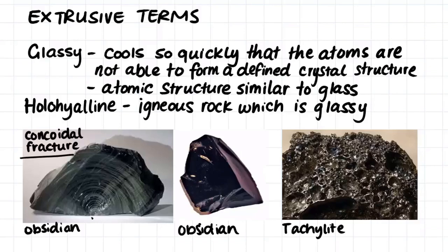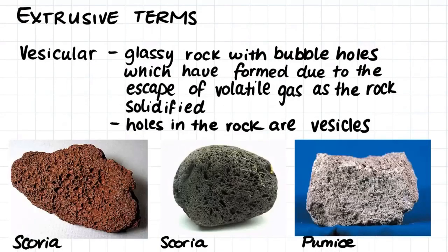This tachylite has a structure within it called vesicles. Another example of glassy rock is pumice and scoria. These rocks, while they don't look like glass, are categorized as glassy because they have also cooled so quickly such that their atomic structure is similar to that of glass.